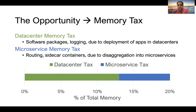The other opportunity in front of us was memory tags. Each of our servers has a subset of memory ranging almost up to 20%, which is used to perform operations such as data center memory tags and microservice memory tags. Both of these categories of memory have much more relaxed performance requirements than our workload memory, so again, a great candidate to be put on slower memory tiers.